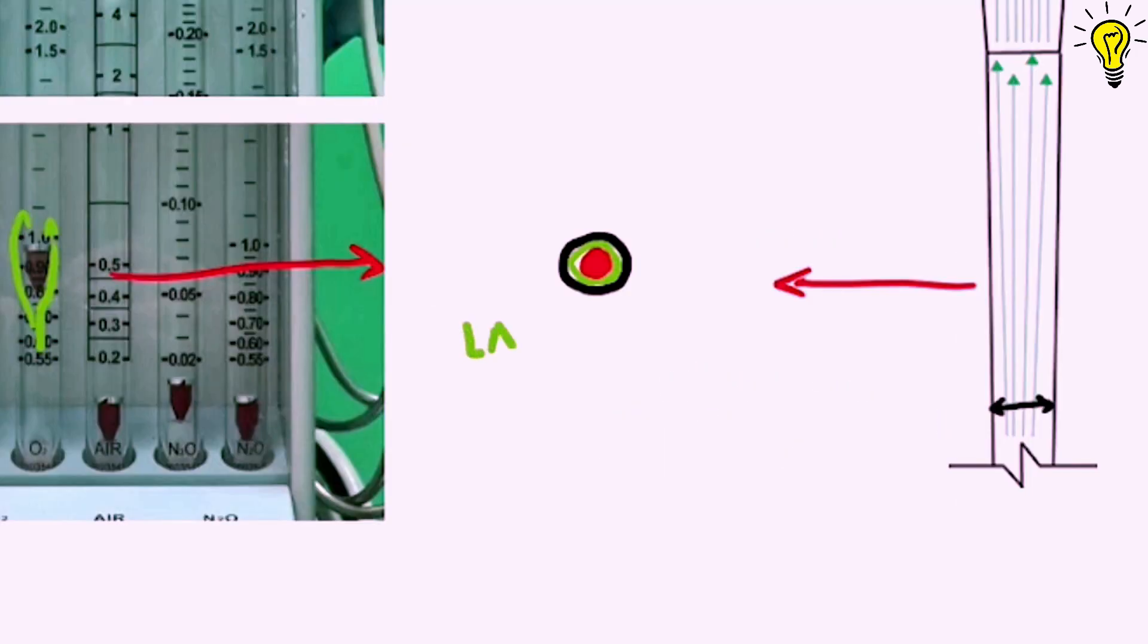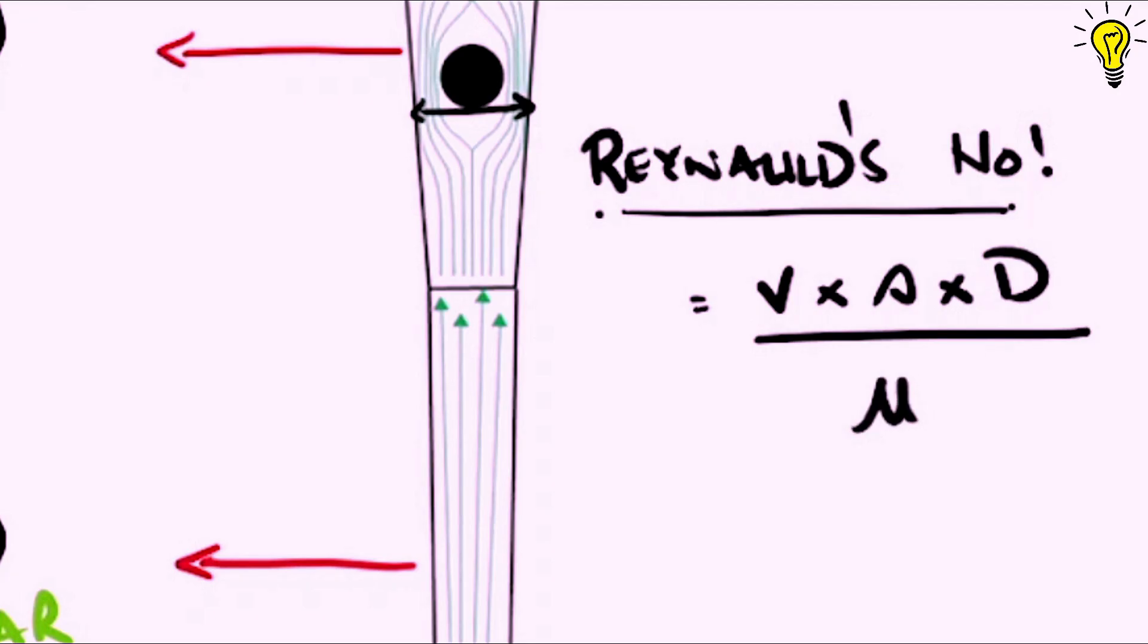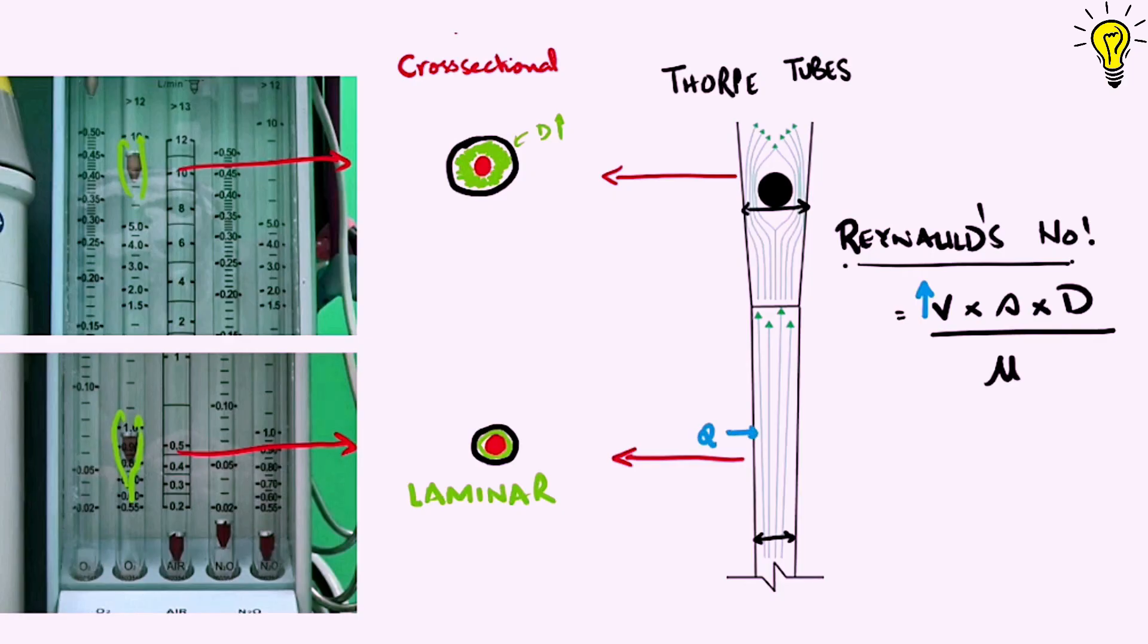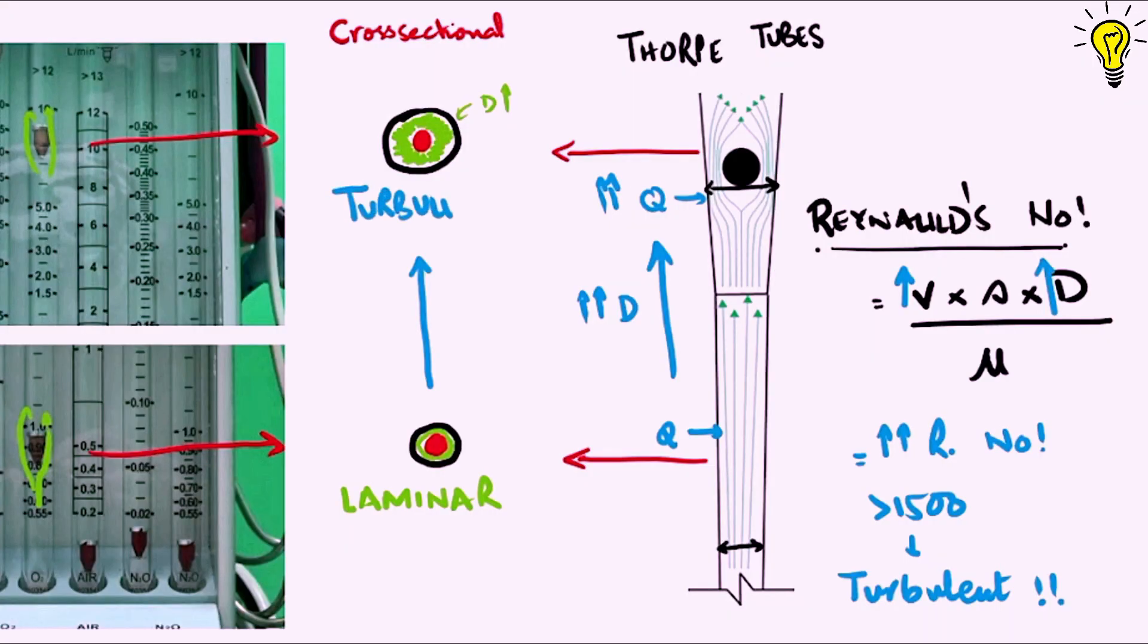At low flows in the lower part of tube, the flow essentially behaves in tubular order. So the laminar flow is there. Now in physics, we know Reynolds number dictates between laminar and turbulent flow. The equation is velocity times density times diameter divided by viscosity. As the diameter of the tube increases, flow increases meaning velocity and diameter both increase, meaning higher Reynolds number. When this Reynolds number is higher than 1500 to 2000, the flow becomes turbulent. So the flow is turbulent in the upper part of the top tube.